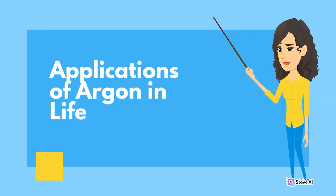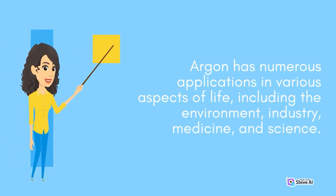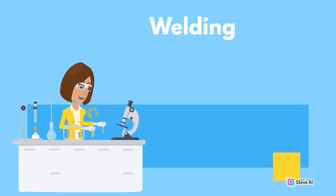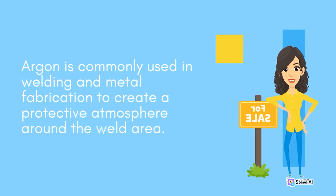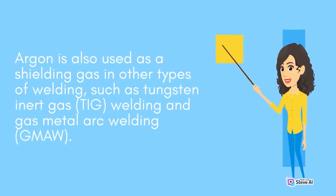Applications of Argon in Life. Argon has numerous applications in various aspects of life, including the environment, industry, medicine, and science. Welding: Argon is commonly used in welding and metal fabrication to create a protective atmosphere around the weld area. The gas is used to prevent oxidation and contamination of the weld area, which can weaken the weld and cause defects. Argon is also used as a shielding gas in other types of welding, such as tungsten inert gas (TIG) welding and gas metal arc welding (GMAW).